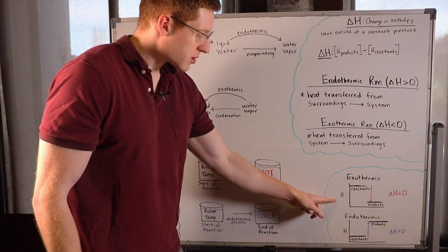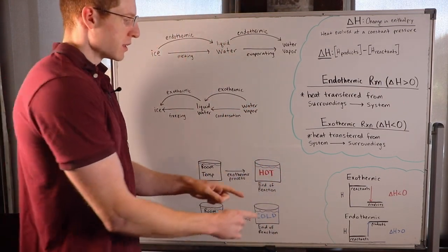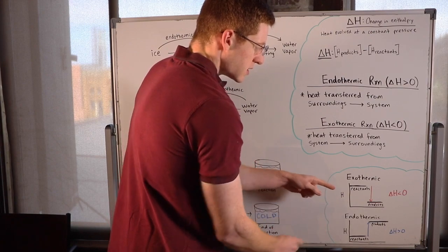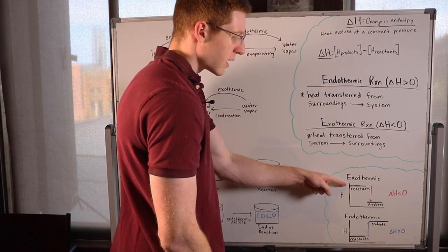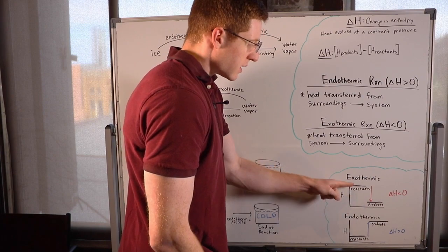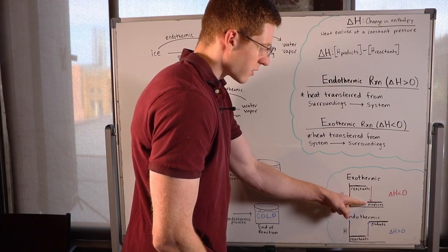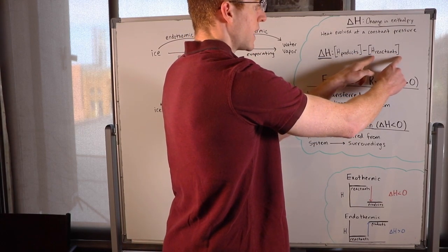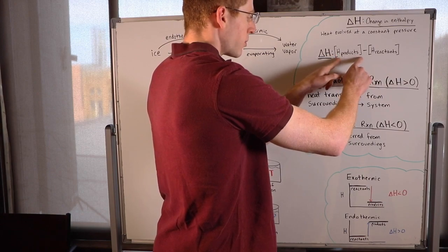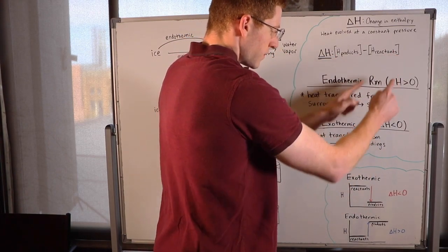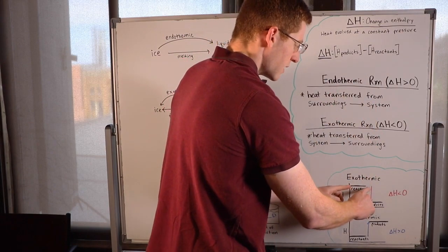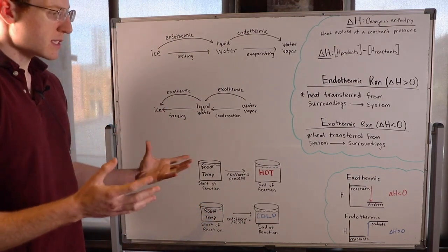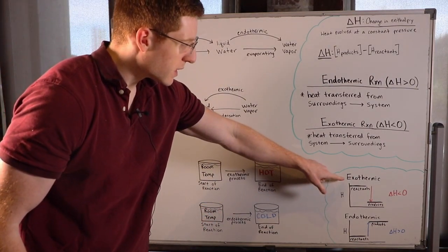You can see these situations represented graphically. In this first case I have an exothermic reaction. On the y-axis I have enthalpy, and you can see that the reactants start out with a higher enthalpy than the products do. The enthalpy goes down from reactants to products. So if we subtract the enthalpy of the reactants from the enthalpy of the products, the reactants' enthalpy is bigger, so we get a negative number — delta H is less than zero, making this reaction exothermic.